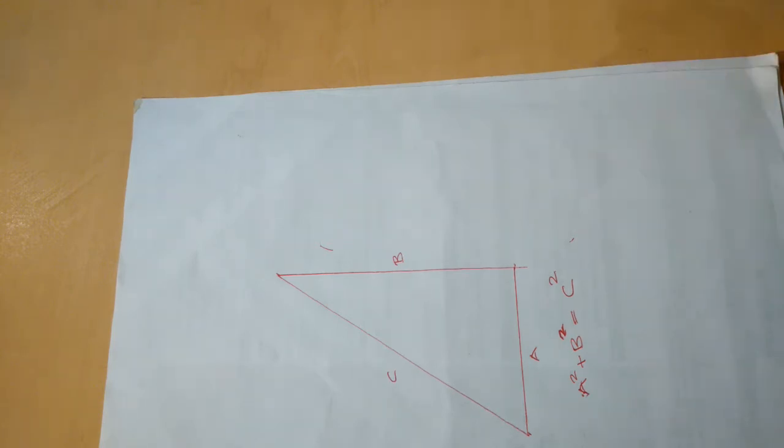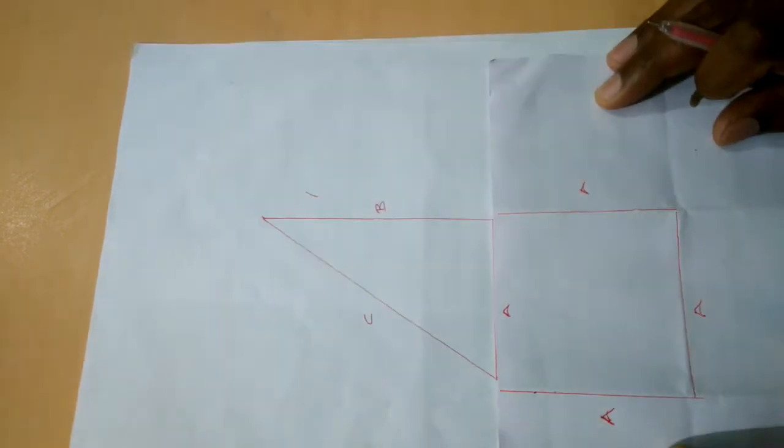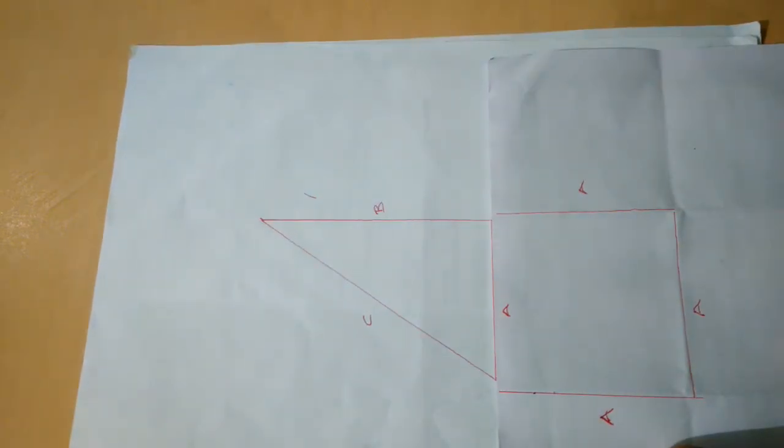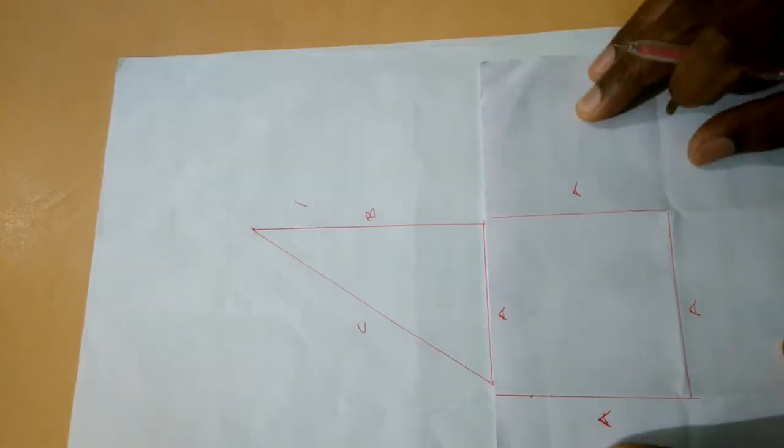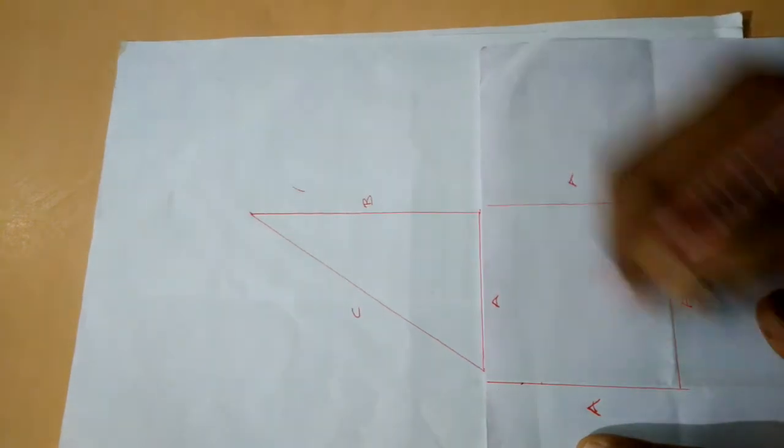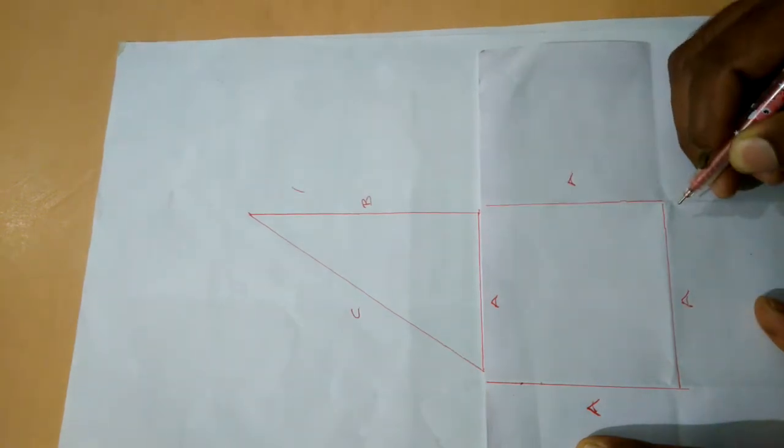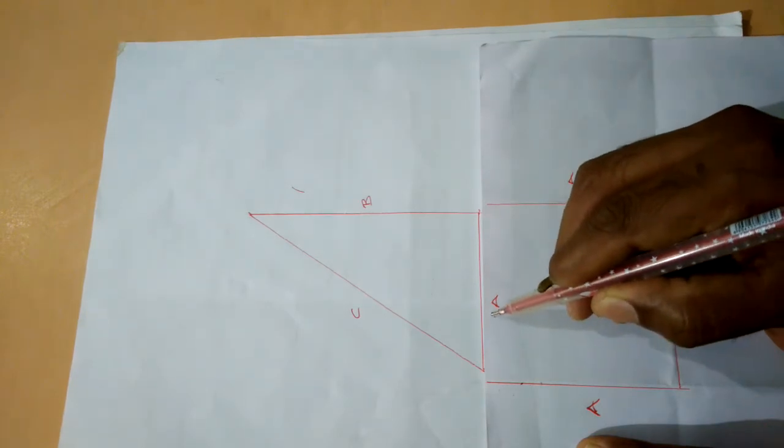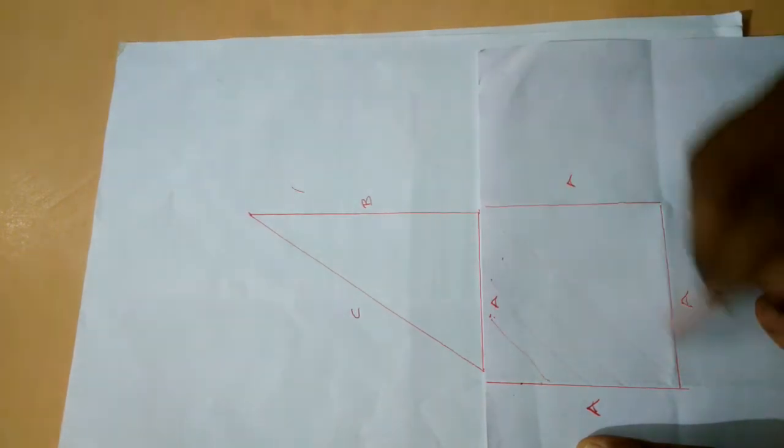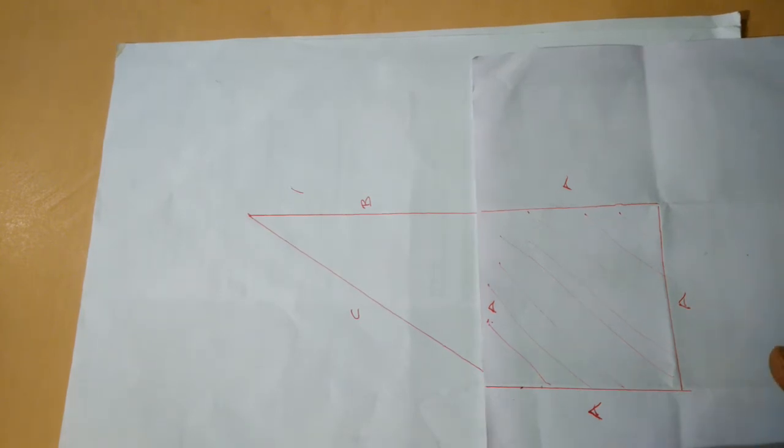So first we have to make a square here. I'm going to make a square with sides a. This side is a, this side is a, and this side is a. So this is a square having equal length, so a squared means this entire area is a squared. So we got a square.